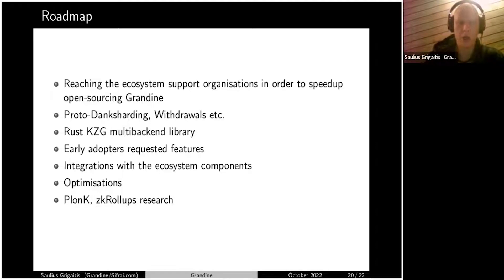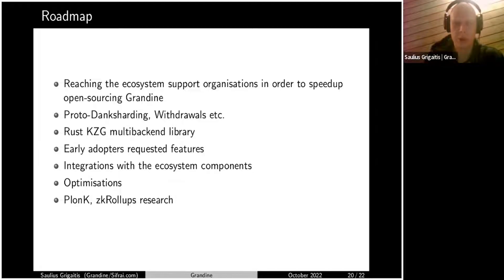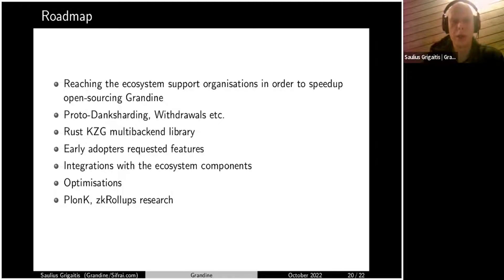Our early adopters are requesting features, and feature development — apart from upcoming hard forks — is mostly based on what we hear from users. The Beacon Node API was a big feature we implemented only because people requested it to run with external validator clients like Vouch. The API opens a lot of use cases, since there are so many components you can attach to the Beacon Node API. Optimizations are something we always do in parallel with feature development.